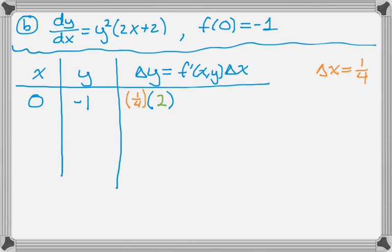But it's the quantity (-1)², which is 1. And then 2·0 is 0 and then plus 2. So 1·2 is 2. So in this case, it's just 1/2. 1/4 times 2 is 1/2.